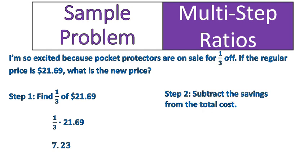One-third times $21.69 gives us $7.23. Now we're going to move into step two, where we subtract the savings off the total cost. Remember, we didn't calculate the new cost of the pocket protector — we calculated the savings. We're saving one-third. So now we need to take the original cost, $21.69, and subtract $7.23, because that's what we're saving. That gives us our new price of $14.46.